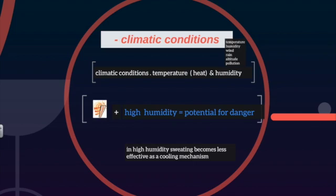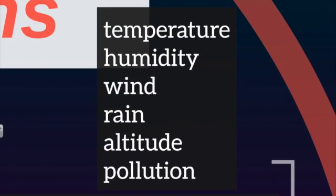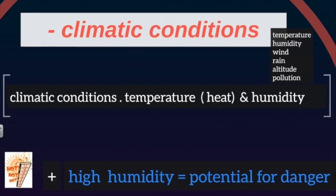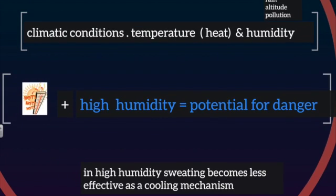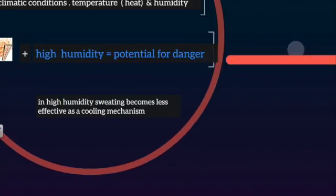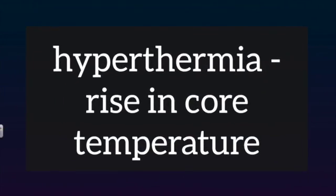When discussing the syllabus examples under climatic conditions, it is more effective to combine some together. For example, high temperatures and high humidity: the body sweats as a cooling mechanism in hot temperatures, but during high humidity the sweat does not evaporate as quickly. This means the body does not cool as effectively as it would in low humidity, and the body's core temperature is likely to rise.